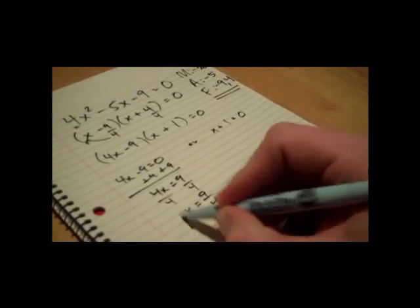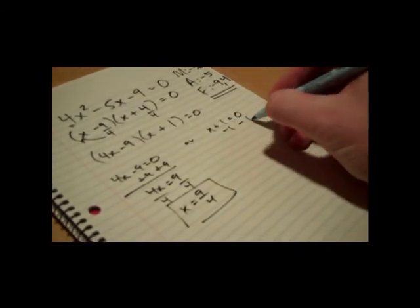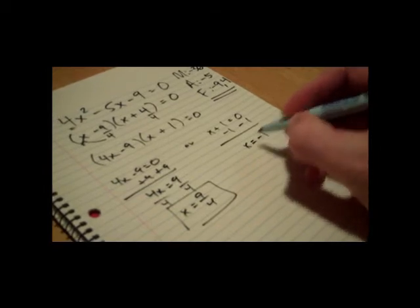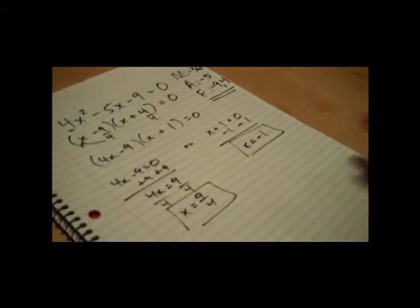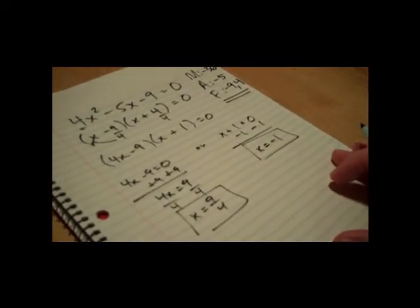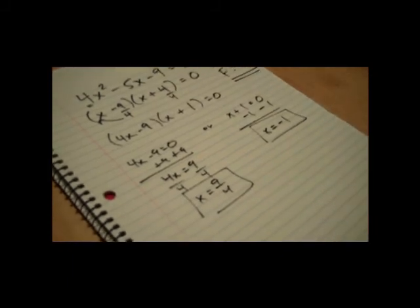In this case, it's really pretty simple: x equals negative 1. So you get your two equations using the MAF process: x equals 9 fourths or x equals negative 1.